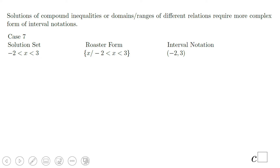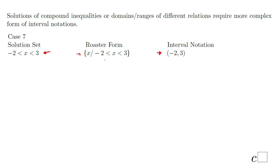Whenever you solve a compound inequality, or when you deal with a domain or range of a relation or function, you may end up with a solution set like case seven: negative 2 less than x less than 3. Roster form: x when negative 2 is less than x, less than 3. The interval notation: negative 2, comma, 3, with parentheses on both ends, because there is no equal sign.